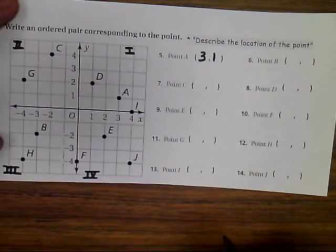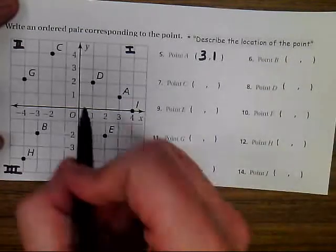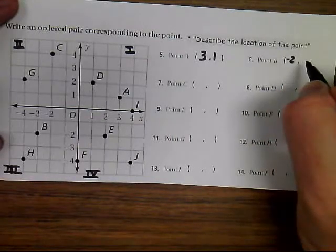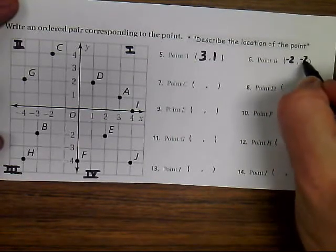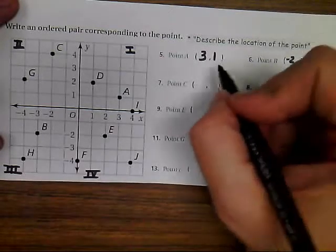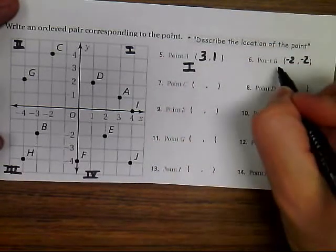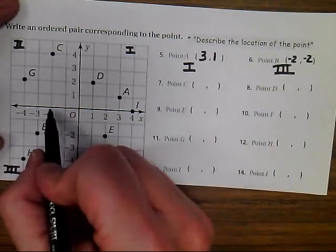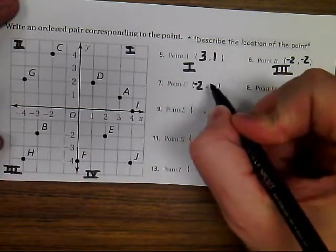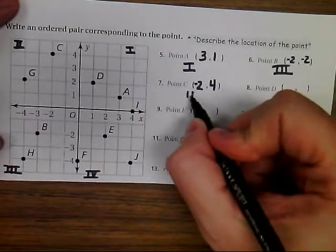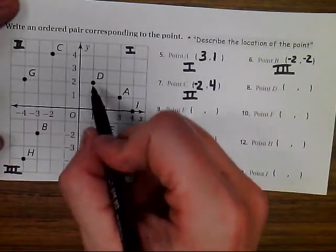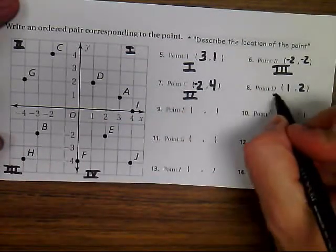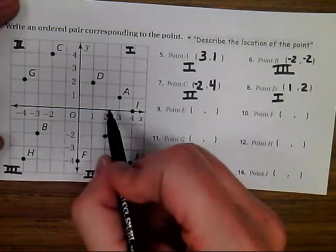For point B, I'm going to go to the left two units and then down two units, that's a negative two, negative two, so we have two negative coordinates here and that would be in quadrant three. Point A was in quadrant one and point B was in quadrant three. Point C, as you can see, I'm going to go over to the left two units and then up four units, that's a negative two, positive four, and that would be located in quadrant two. Point D, I'm going to go over one and up two, those are both positive, so my coordinates would be one comma two, and that's in quadrant one.